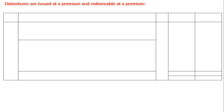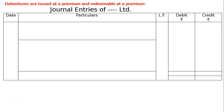The question is: issued Rs 30,000 in 10% debentures of Rs 100 at a premium of 10% and redeemable at a premium of 15%. Hence, issued at a premium, redeemable at a premium. Draw the format and journal entries of the company.